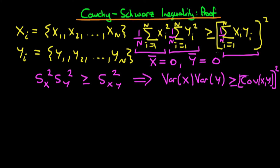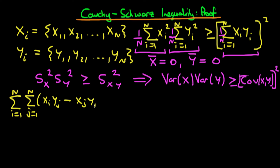So how do we actually go ahead and prove the Cauchy-Schwarz inequality? In order to do this, we're going to define the sum over a particular expression: the sum from i equals 1 to n of the sum from j equals 1 to n of xi times yj minus xj times yi, all squared. It's not immediately clear, but this is actually going to yield something useful for proving the Cauchy-Schwarz inequality.